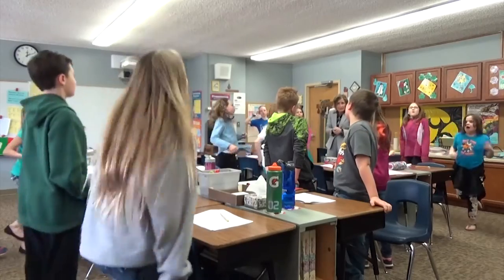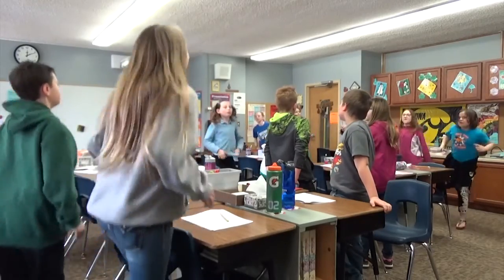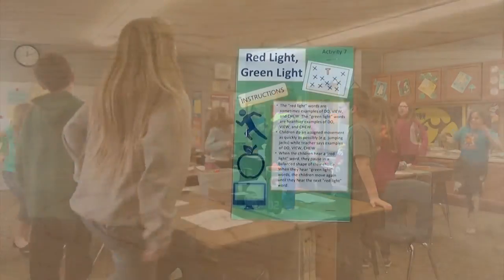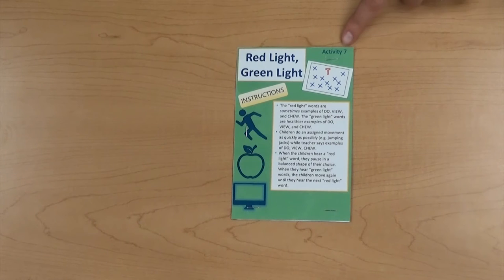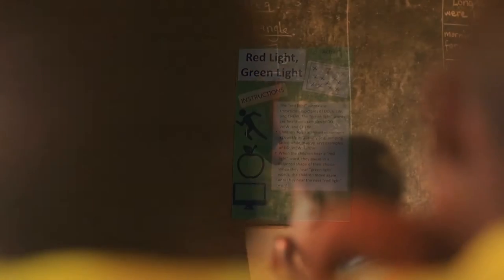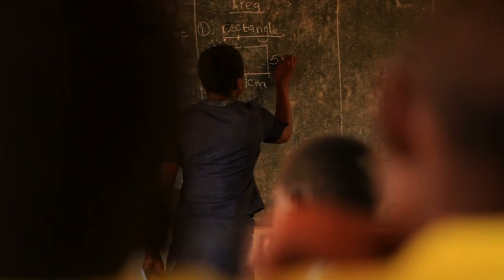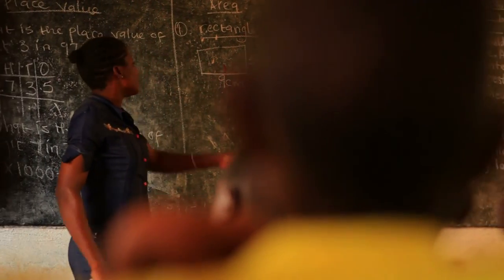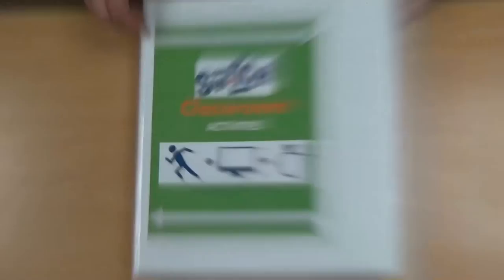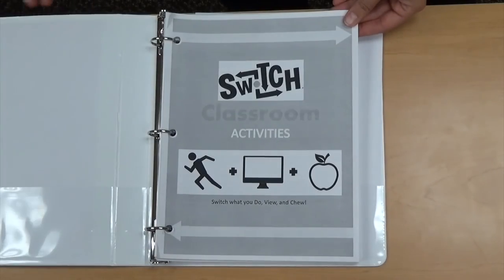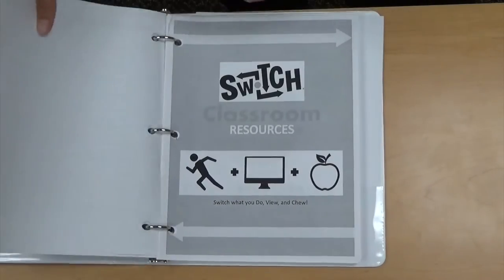These note cards can be used as a quick and easy description of the recommended weekly activity. The activity number in the top right corner of the flashcards lets you know where the activity is listed in the Switch Classroom Activity booklet. You can mix and match any of the activities to best fit what your class desires. For a detailed view of the activities, please read through the Switch Classroom Book and the Resource Book.